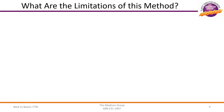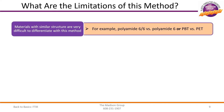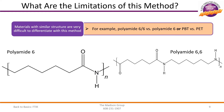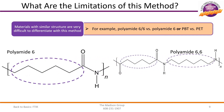While FTIR is a very powerful technique, there are limitations that may affect where this test method will be an effective problem solving tool. One limitation is that materials with a similar structure are difficult to differentiate. For example, two different polyamide materials, 6 and 6,6 — only slight differences in the backbone are apparent in the hydrocarbon groups. Therefore, these spectra will be nearly indistinguishable and will need additional tests to properly identify.